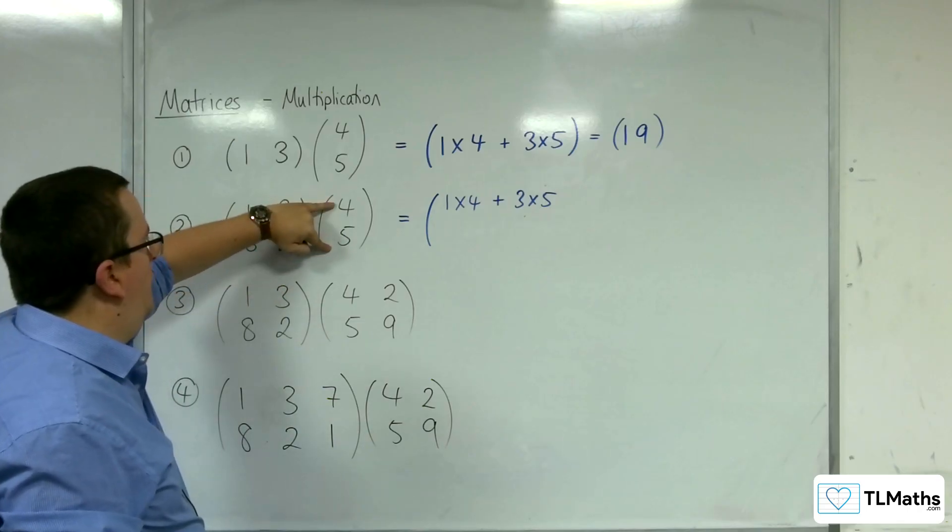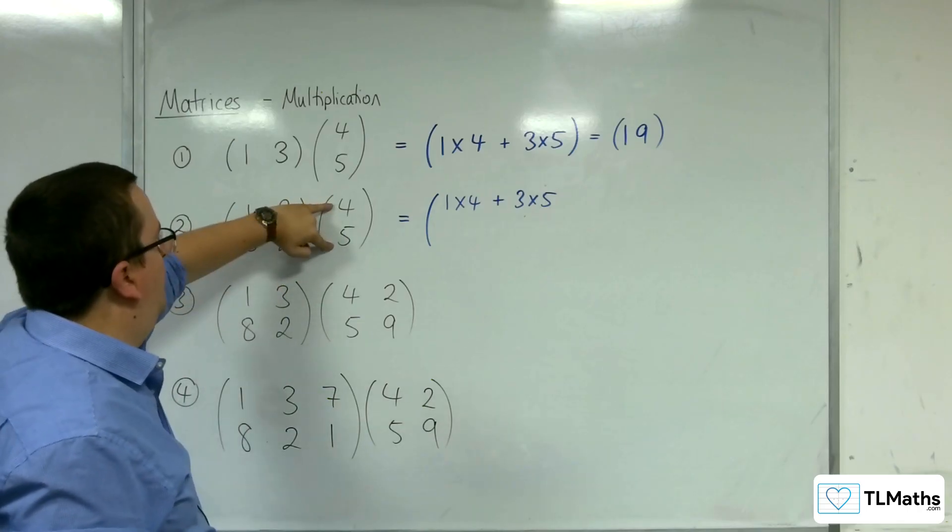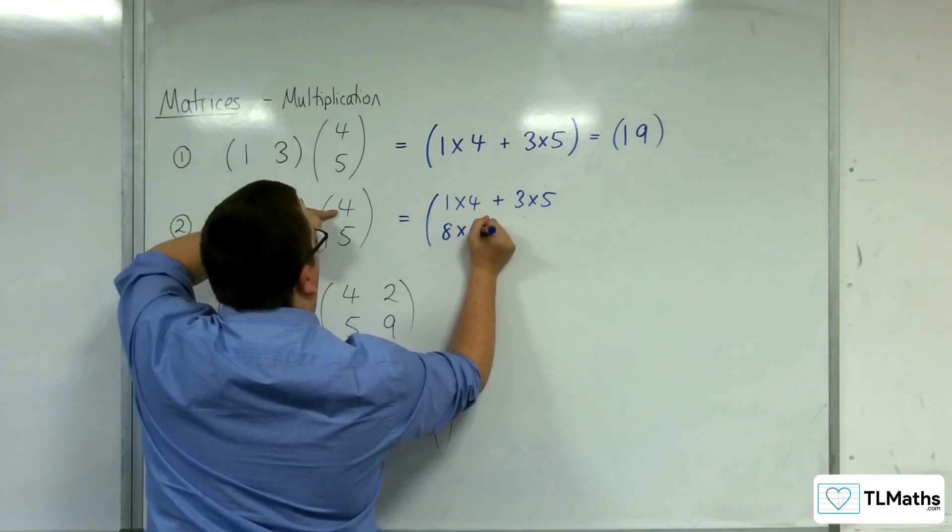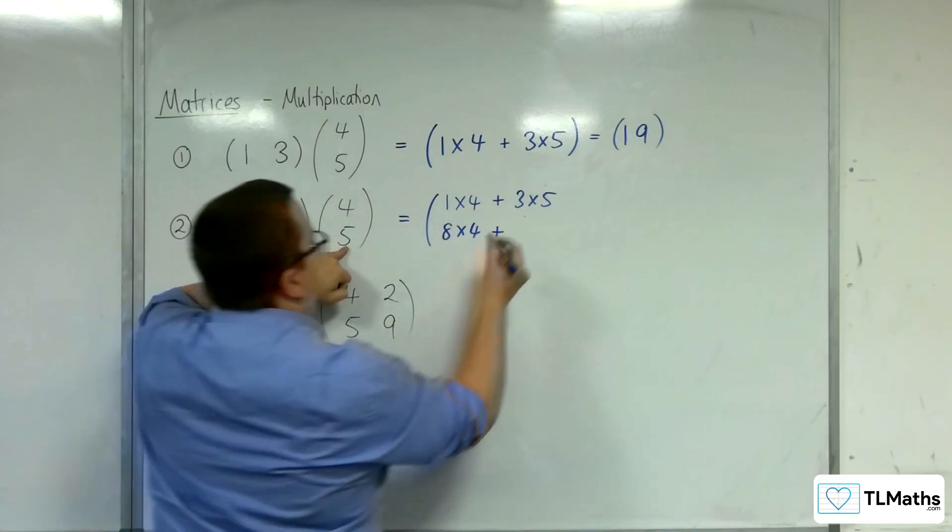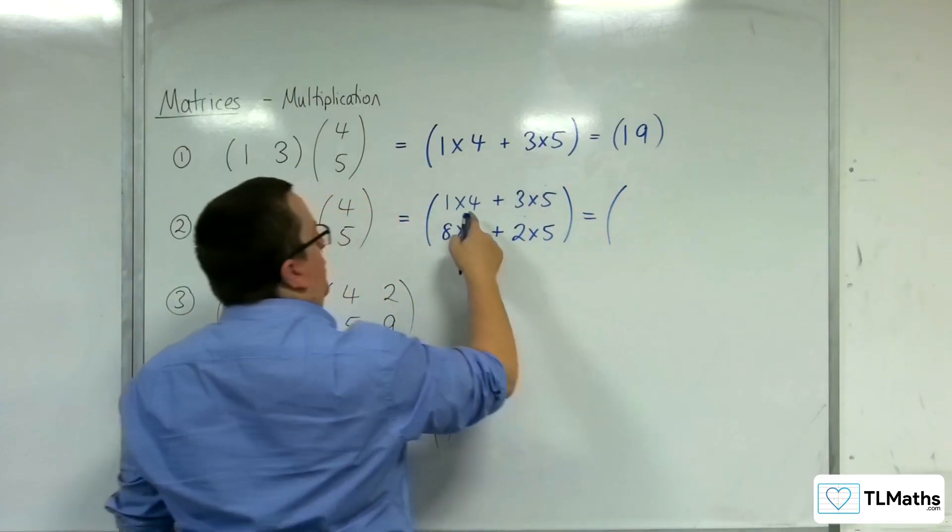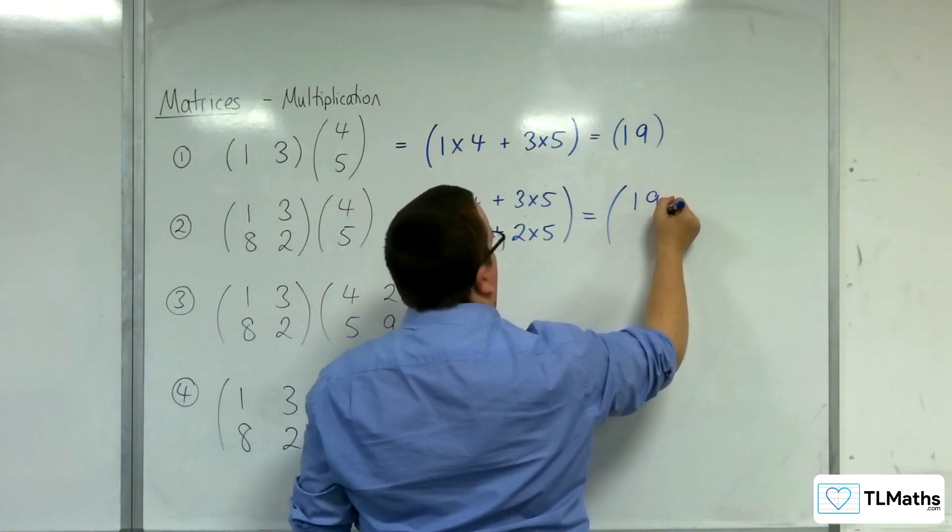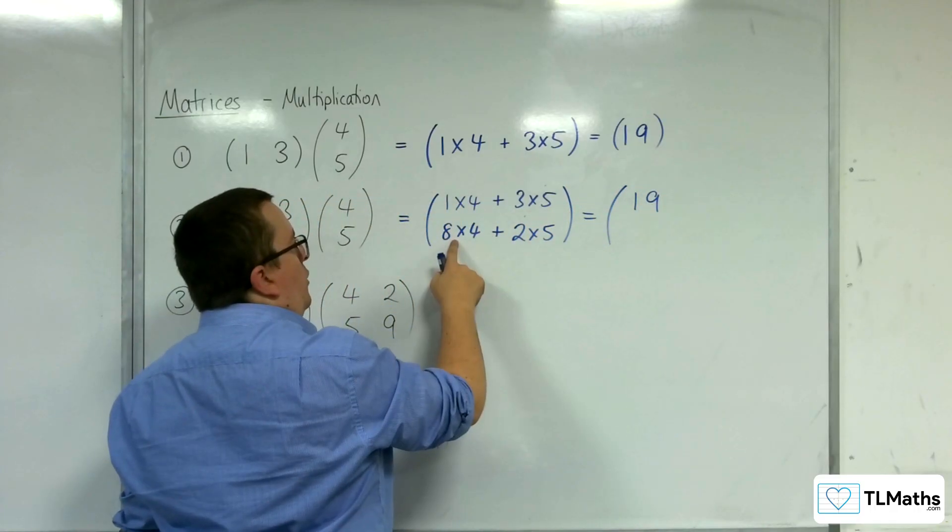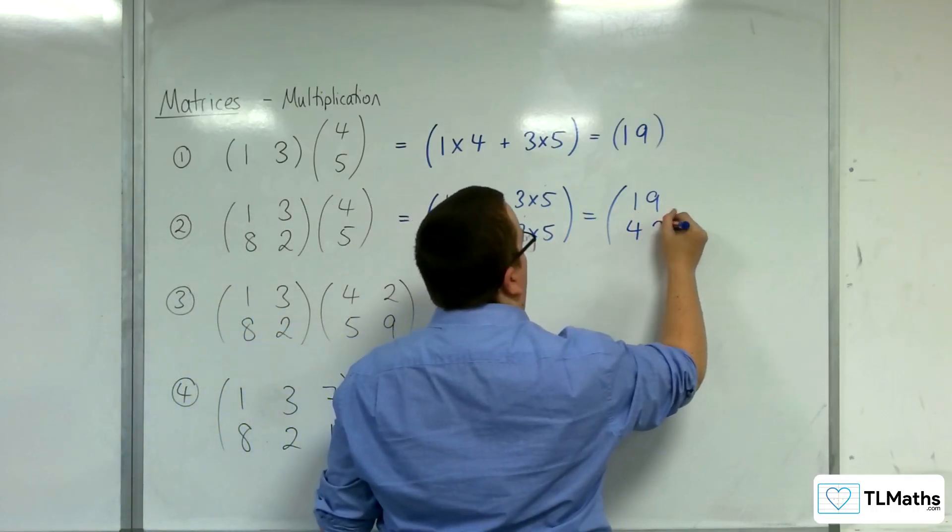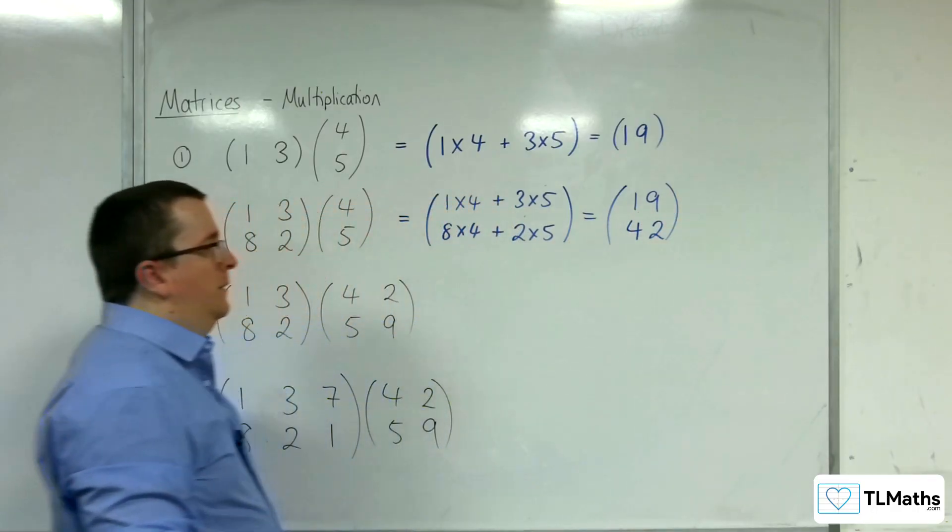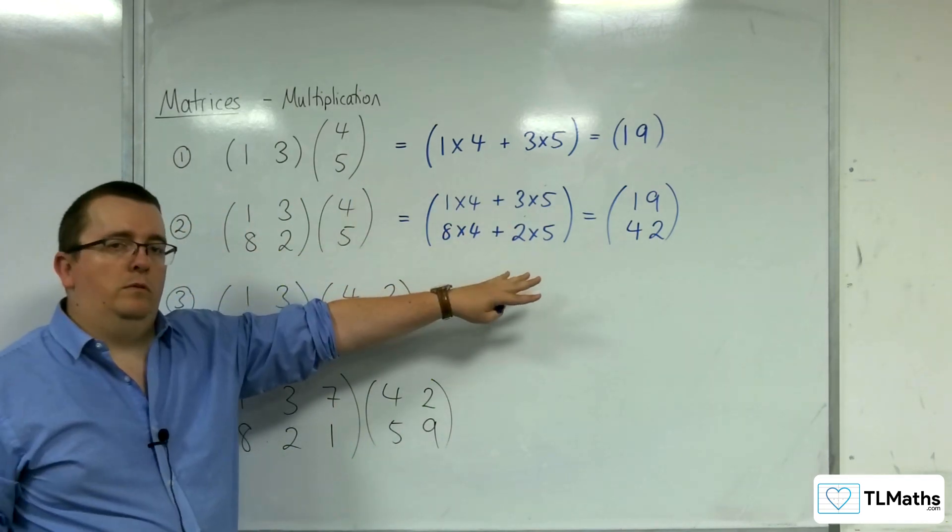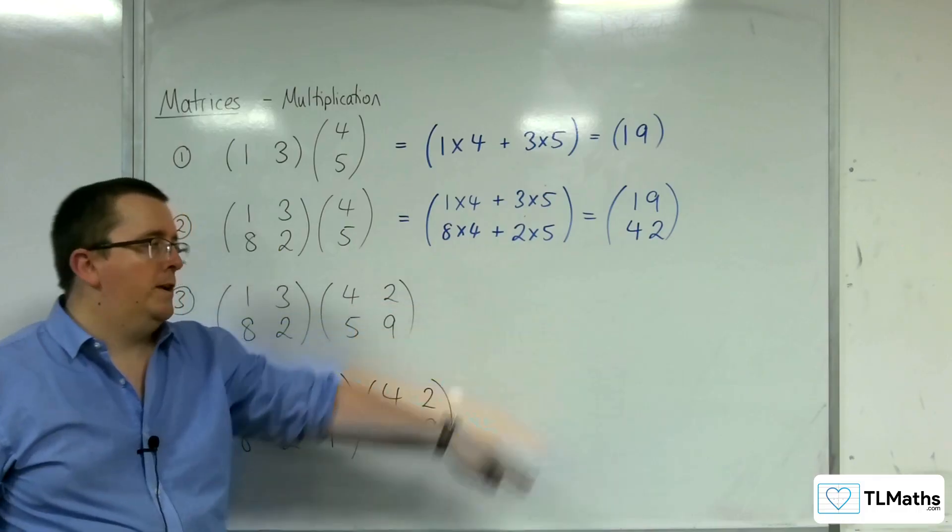Then, you take the next row and multiply that by the column. We've done 1, 3 by 4, 5. Now, we're going to do 8, 2 by 4, 5. So, 8 by the 4, 2 by the 5. We have the 19 in the top row. Then, we've got 8 times 4 is 32 plus 2 times 5 is 10, so 42 in the bottom row. So, we've multiplied this 2 by 2 by 2 by 1. We end up with a 2 by 1.